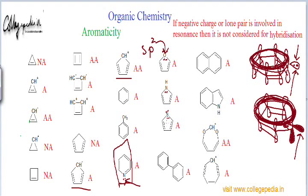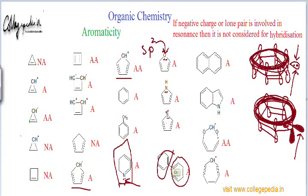So Furan is aromatic as well. This is how we look for aromaticity. The next molecule is biphenyl. When you have more than one ring, you have to look for aromaticity individually in each ring. When you have 2 rings and both the rings are aromatic, the molecule is aromatic. Here you have 2 phenyl rings — this ring is aromatic, the other ring is aromatic as well, so the whole molecule is aromatic.